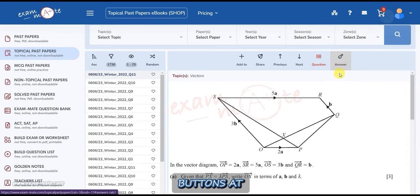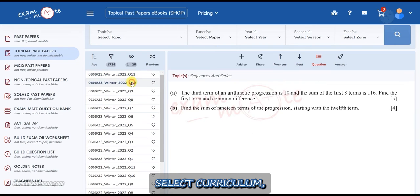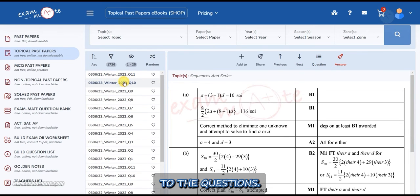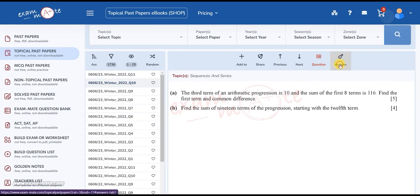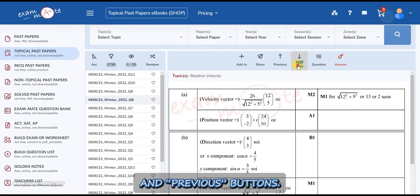There are several buttons at the top of the right window. When you select curriculum, the default system will show you the questions. Click on the answer button to view the answers to the questions. You can move between questions using the next and previous buttons.